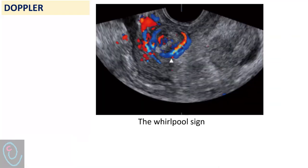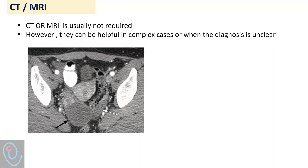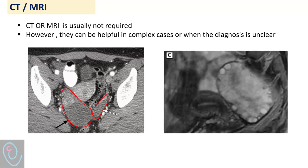Another feature of Doppler study is the whirlpool sign, which demonstrates circular or coiled vessels within the twisted pedicle. CT or MRI is usually not required; however, they can be helpful in complex cases or when the diagnosis is unclear. In one image, we can visualize the difference between the two ovaries — the right ovary appears normal while the left ovary is markedly enlarged. Another image shows the uterus and the significantly enlarged ovary behind it, with small follicles pushed to the periphery.